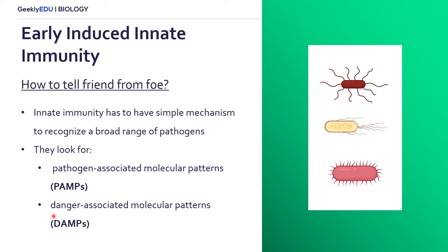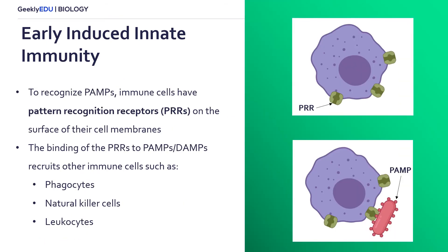Innate immune cells will also look for our own cells that are either damaged or have been transformed in a negative way, such as cancer cells. These are called danger-associated molecular patterns, or DAMPs — patterns found on our own cells that the innate immune response has to address. To recognize these PAMPs or DAMPs, our immune cells have what are called pattern recognition receptors, or PRRs.